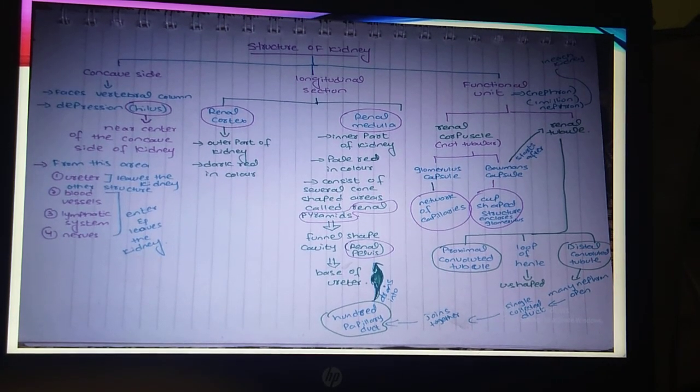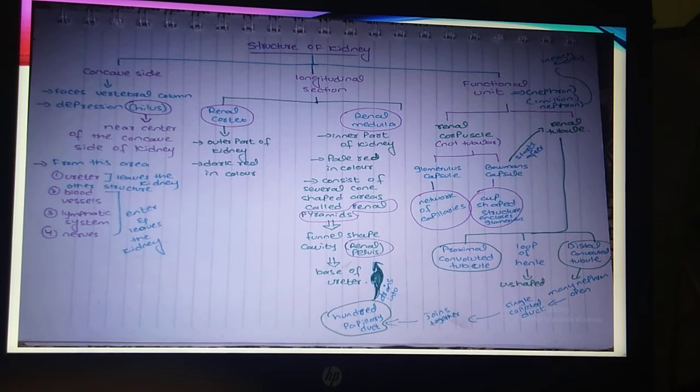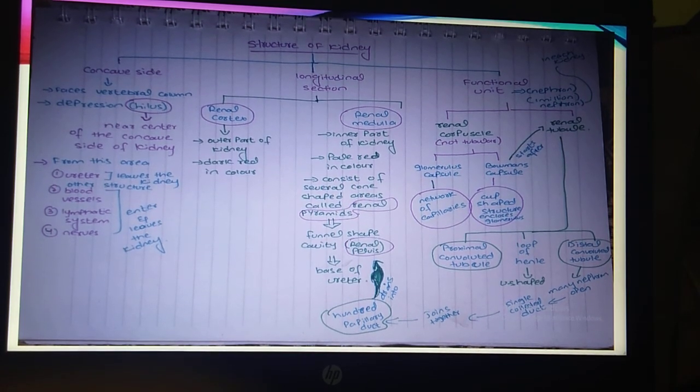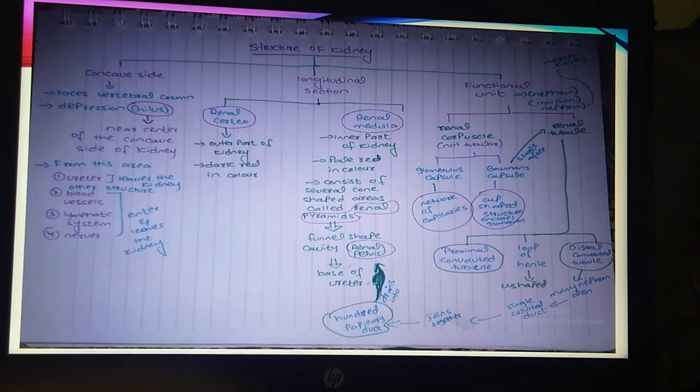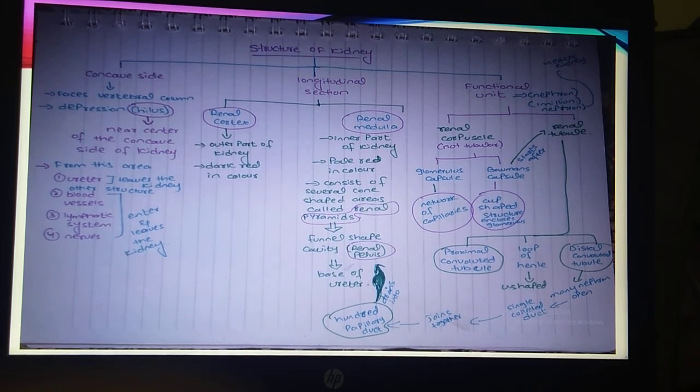جو capillaries ہوتی ہیں یعنی کہ جنہوں نے آرٹریز اور وینز کو جوائن کیا ہوتا ہے، یہ پورا ان کا نیٹ ورک ہوتا ہے - glomerulus capsule۔ اور جو Bowman's capsule ہے وہ cup shaped structure ہوتا ہے جس نے glomerulus کو کور کیا ہوتا ہے۔